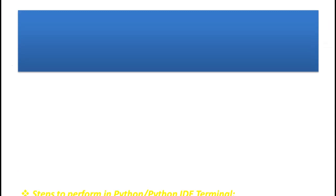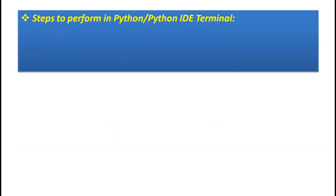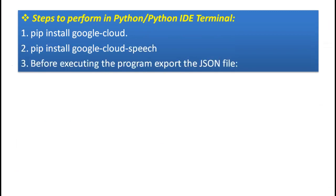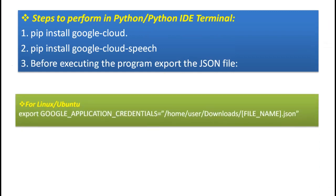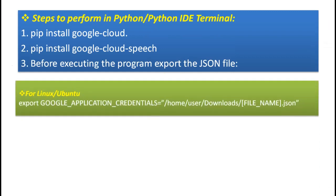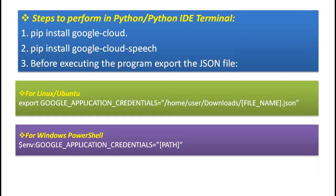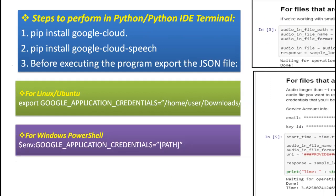Here we discuss the steps to perform in Python or Python IDE terminal. Run 'pip install google-cloud' and 'pip install google-cloud-speech.' Finally, before executing the program, export the JSON file. For Linux and Ubuntu, this is the procedure, and for Windows PowerShell, follow the respective steps.